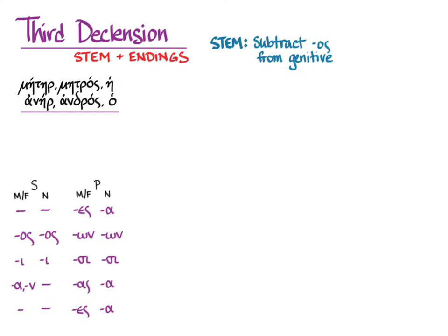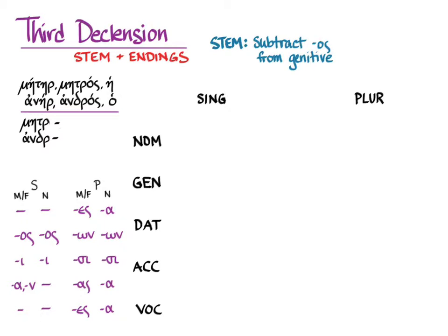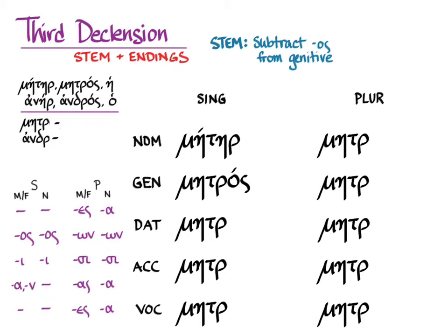We'll follow the rule where we take the genitive singular and subtract the -os to get our stems. Starting with μήτηρ (mother), here is the nominative singular, the genitive singular, and the stems. Following the rule and adding our endings works fine in the dative singular. In the accusative singular, we see what linguists call the short vowel grade of the stem. In μήτηρ, the nominative singular has the long vowel grade with the eta before the rho. The genitive μητρός shows the zero grade — without any vowel before the rho — and the accusative gives us the short vowel grade, μητέρα.